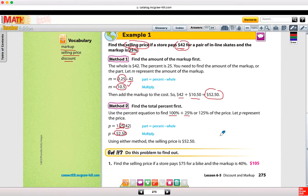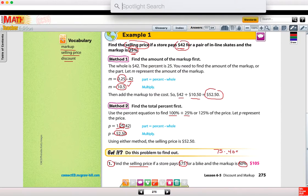I'll show both of those methods for the got it problem at the bottom of page 275. It wants to know the selling price if the store pays $75 and the markup is 40%. So I could take 75 times 0.40 and that would give me the amount of the markup. 75 times 0.4 is $30.